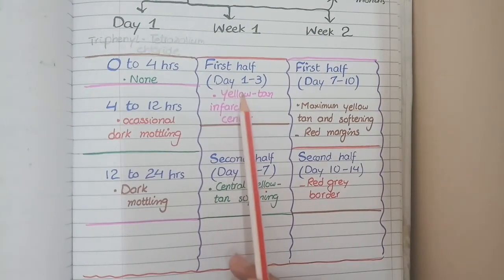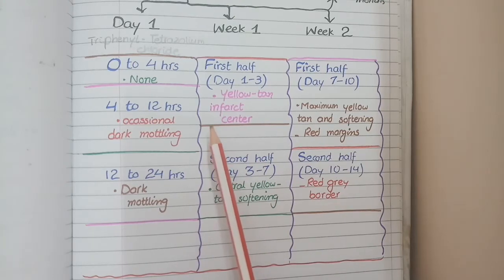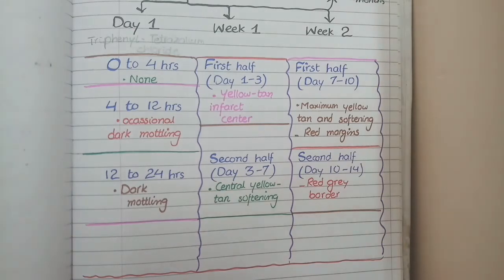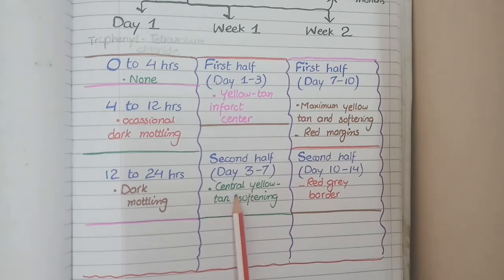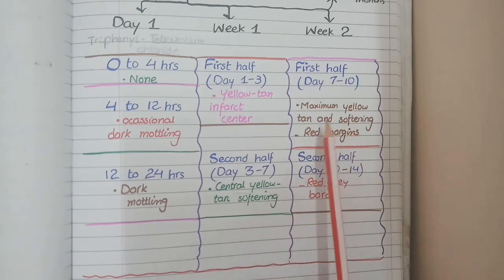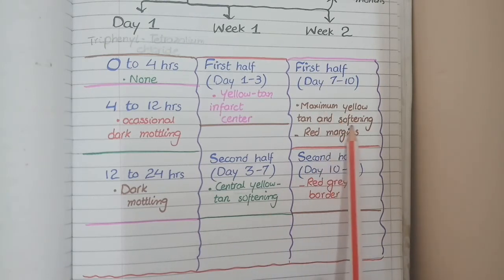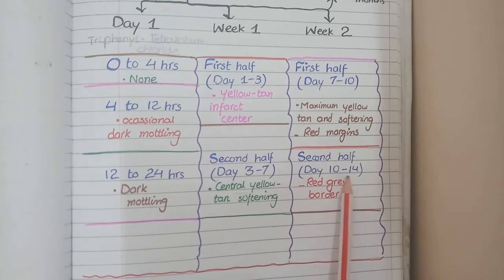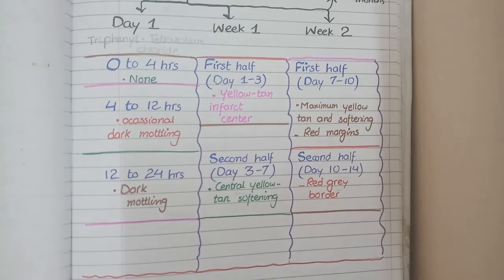In the first half of week 1, the infarcted region appears yellow-tan in color, due to pale dead myocardium infiltrated with neutrophils. In the second half of week 1, macrophages arrive and phagocytose the dead myocardium, so the central region of the infarct becomes soft — you see a yellow-tan area with central softening. In week 2, the first half shows maximal yellow-tan central softening with red margins of granulation tissue at the borders. The second half shows well-developed granulation tissue with a red-gray border. After week 2 until 2 months, you see a grayish-white scar, which becomes dense and prominent after 2 months.